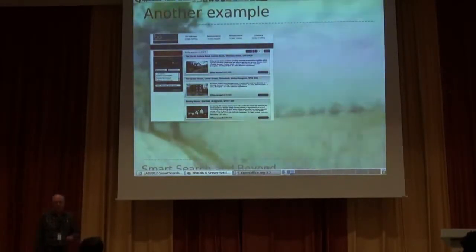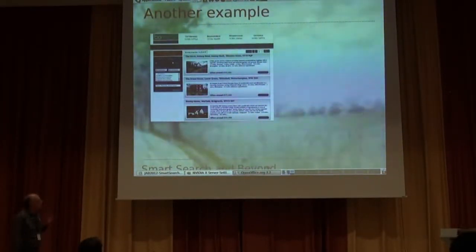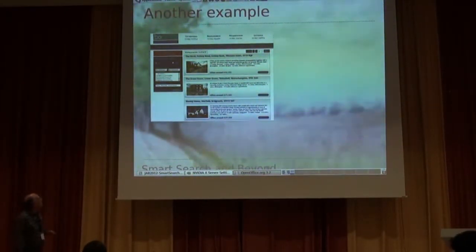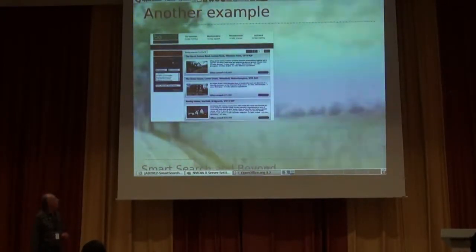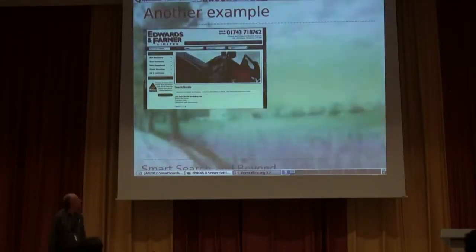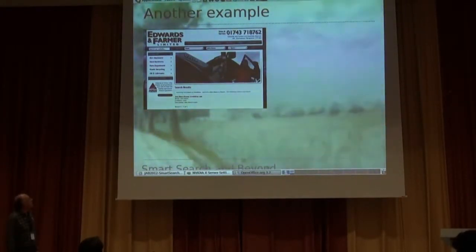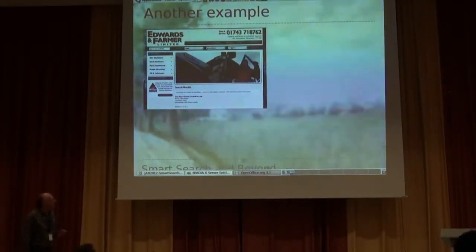This is another one — actually an estate agent with properties. This is the search results page, and you can see from this that it's completely customizable. You use layout overrides to customize it. On the left-hand side, we've got the Mod Finder module, which controls the form where you enter the search queries. On the right-hand side of the central part of the screen is the component output. And in fact, most of the menu items along the top — where it says sales and lettings — are actually links to Smart Search filters. And this one is actually a genuine 2.5 site running Smart Search, with a strip across the top where you have a search bar and some drop-downs where you can filter the search queries.